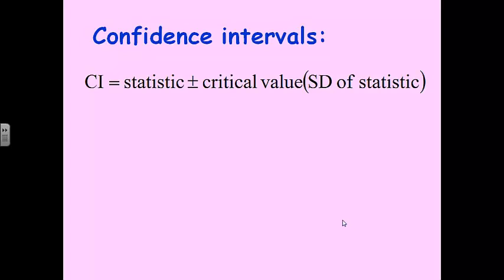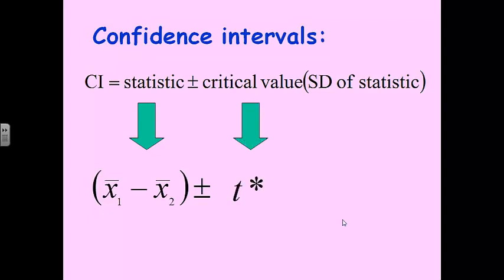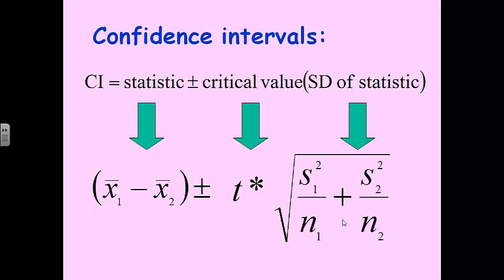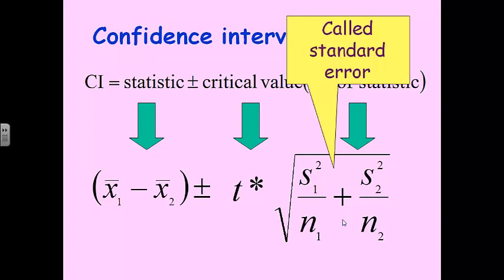For a confidence interval, here's our good old friend the confidence interval formula — it hasn't changed. You take your statistic plus or minus your critical value times the standard deviation of the statistic. The statistic for a two-sample is x̄₁ minus x̄₂ — you subtract the two means. The critical value is still the t* value. The standard deviation of the statistic — the standard error — is the square root of (s₁² / n₁) plus (s₂² / n₂). That part is called the standard error, and combined with your t* critical value, that's called the margin of error.